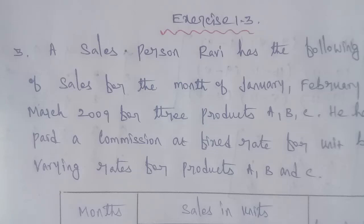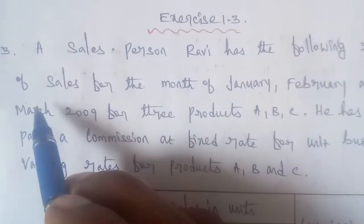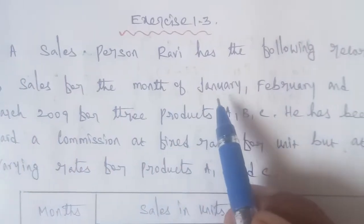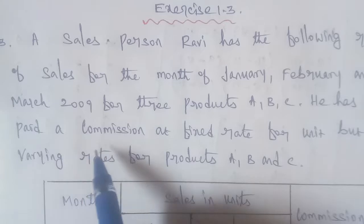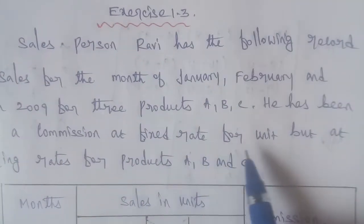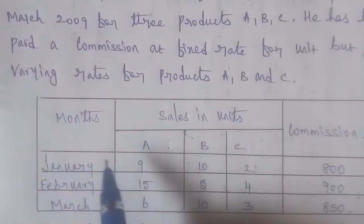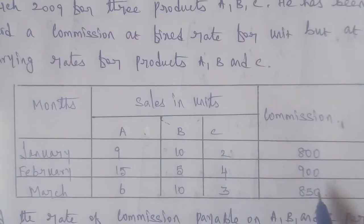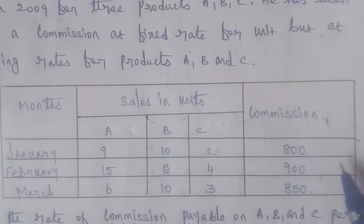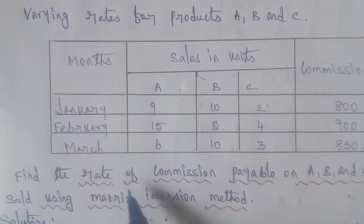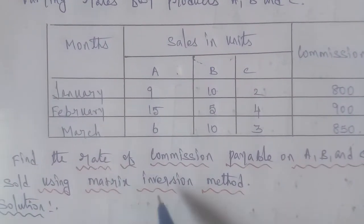Exercise 1.3, question number 3. A salesperson has the following record of sales for the months of January, February, and March 2009 for three products A, B, and C. He has been paid a commission at a fixed rate per unit, but at varying rates for products A, B, and C. Find the rate of commission payable on A, B, and C per unit sold using the matrix inverse method.